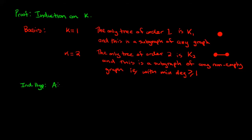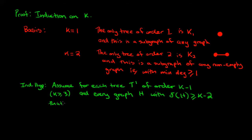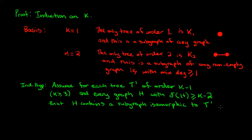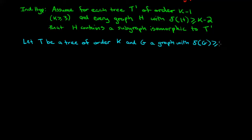As the inductive hypothesis, we assume that for each tree t prime of order k minus one, where k is at least three, and every graph h with minimum degree at least k minus two, h contains a subgraph isomorphic to t prime. In other words, the inductive hypothesis assumes the result is true for k minus one. Our goal is to show it will be true for k. So now let t be a tree of order k and g a graph with minimum degree at least k minus one; we want to show g contains a subgraph isomorphic to t.